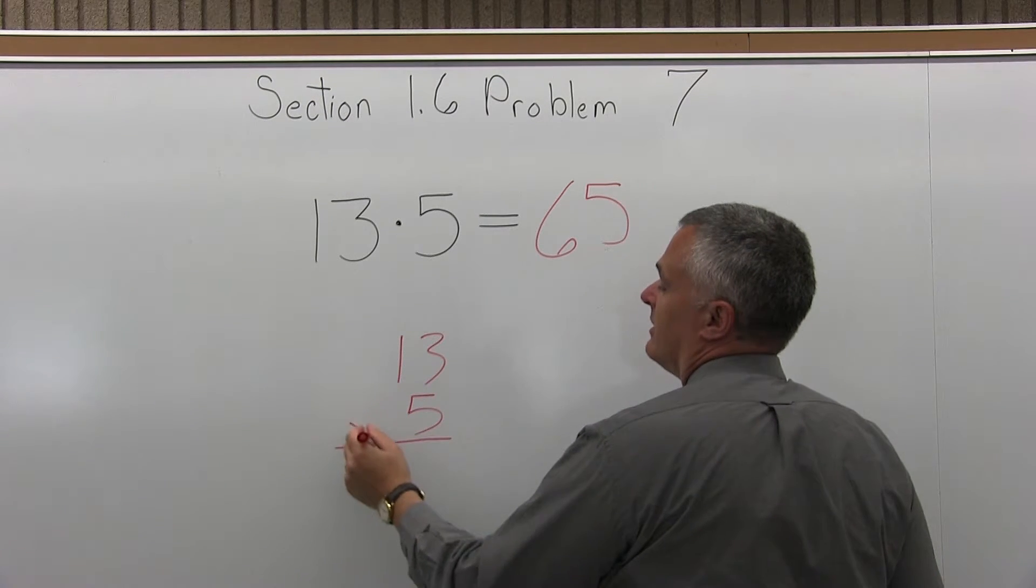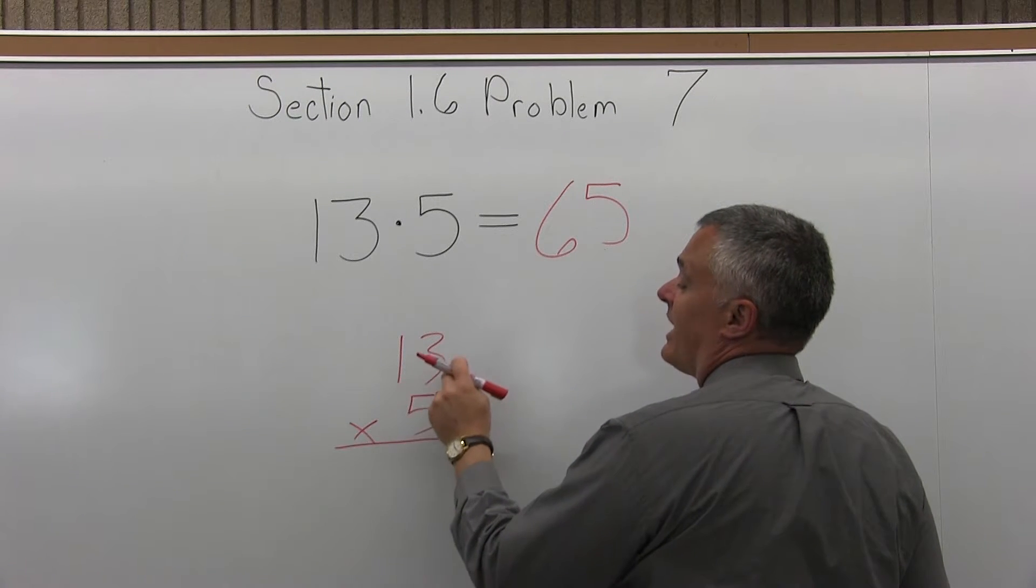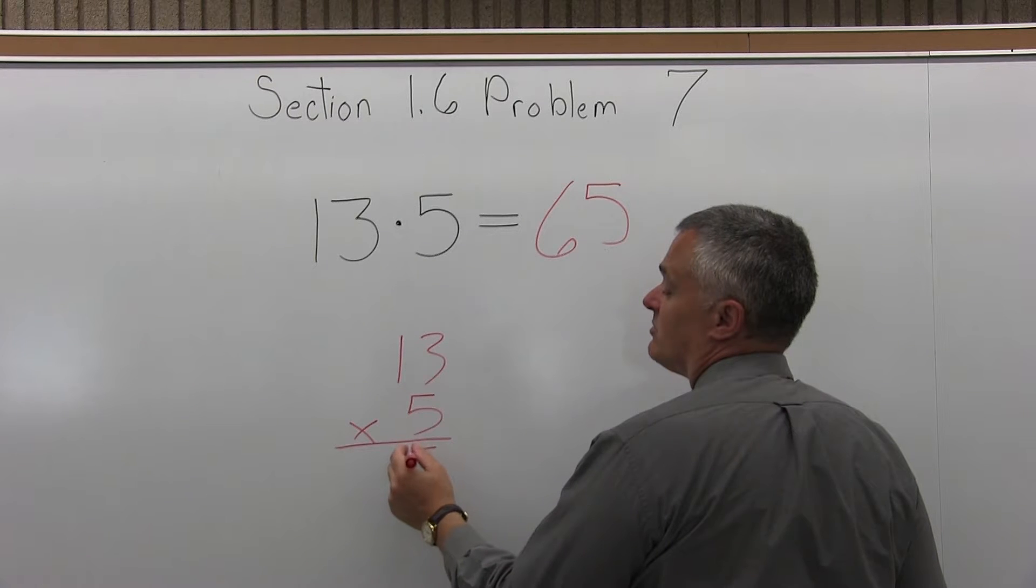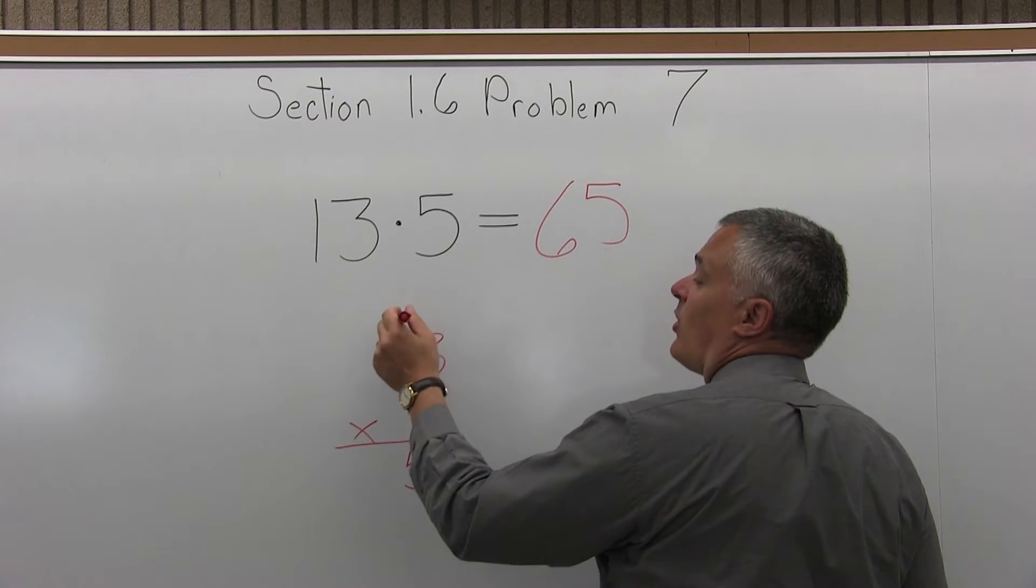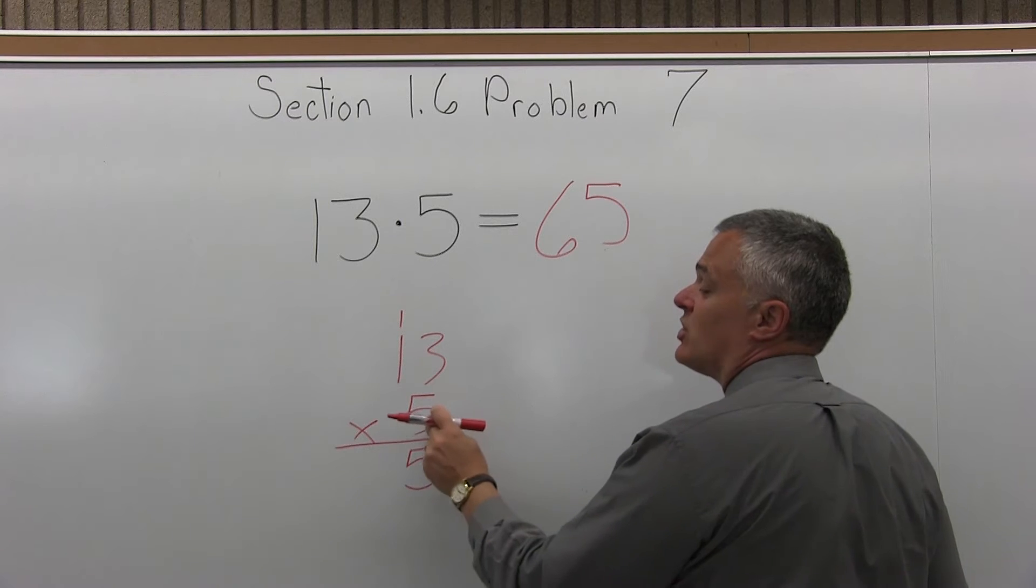So you can write it this way, and do 5 times 3 is 15. So you put the 5 from the 15 underneath, carry the 1 from the 15 to the top of the next column.